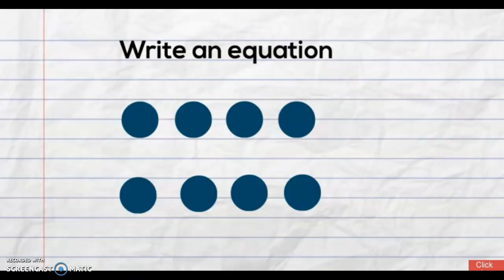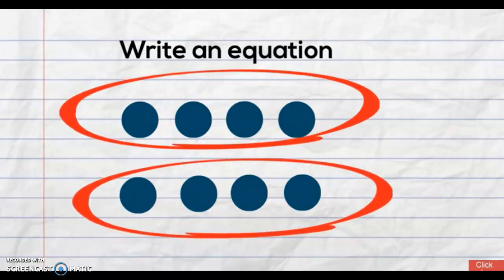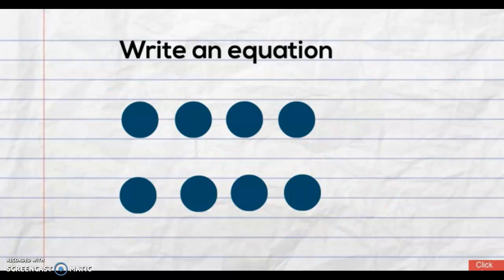Now let's write an equation using this array. First, let's figure out how many rows we have. One, two. We have two rows. So it'll be two times the number of columns.